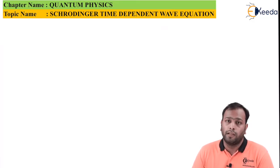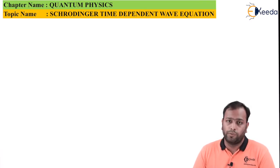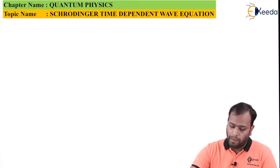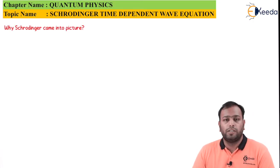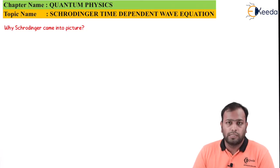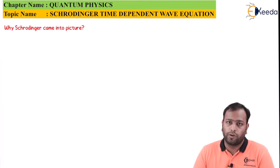We will be using the result from the previous derivation to derive this equation — an important topic for your university exams. Now, why did Schrödinger come into picture? The reason is that de Broglie's hypothesis had no mathematical support, so Schrödinger provided that mathematical support, and hence Schrödinger's wave equation came into picture.